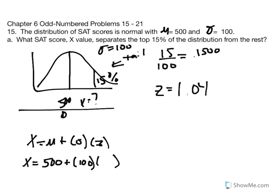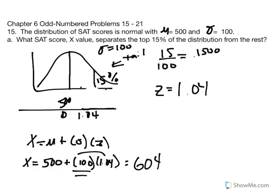So we're looking for the score that is 1.04 standard deviation units above the mean. We have the mean added to the product of our standard deviation multiplied by the Z score: 500 plus 100 times 1.04. That's 1 of those and 0.04 of those added to 500. Doing the calculation, we get X equal to 604. So a score of 604 separates the top 15% of SAT scores. A university may say they're only taking those who score in the top 15th percentile — at 604 or above.